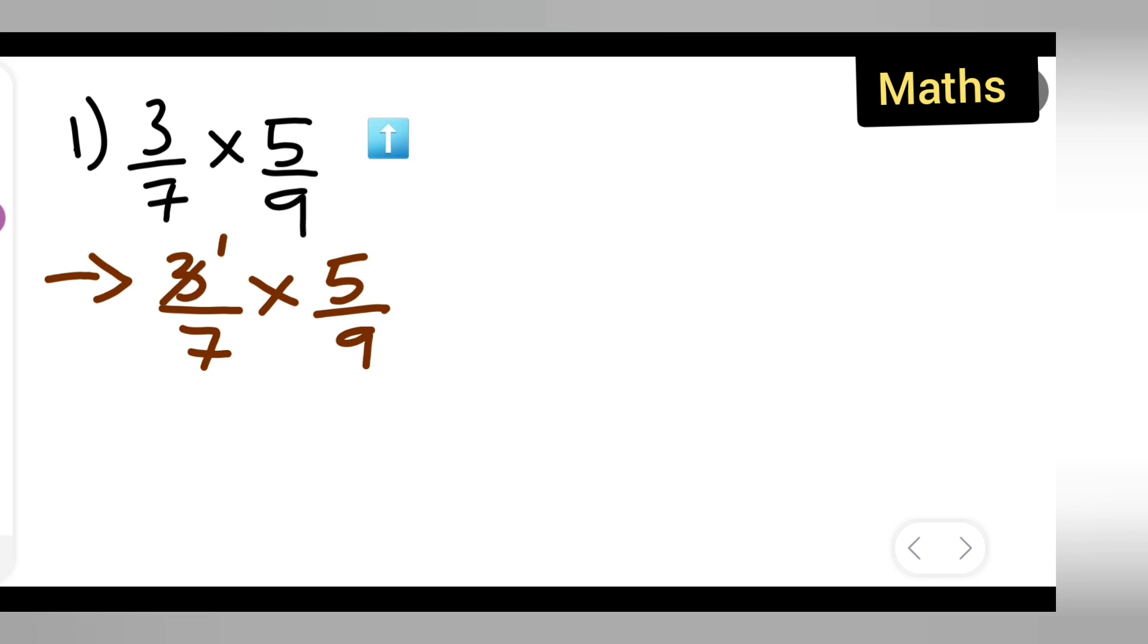Next step, what you are going to do is 3 ones are 3, 3 threes are 9. You can cancel this. Next, finally you can write it as 5. What is left with you is 1 and 5.